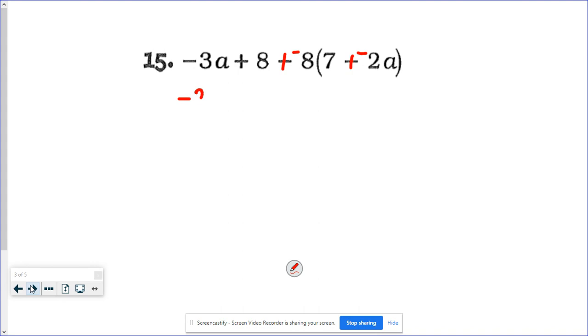Now the negative three a, I didn't do anything with that. I just want to rewrite it. Rewrite the eight. Negative eight times seven is going to be a negative 56 and negative eight times a negative two a is going to be a positive 16 a.